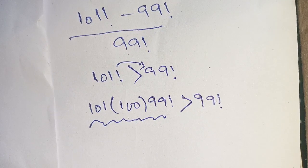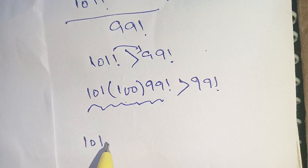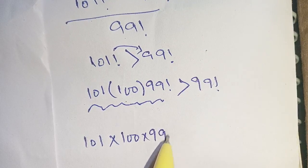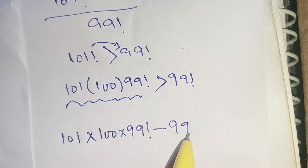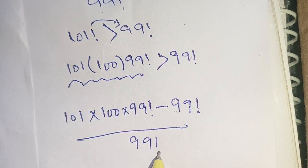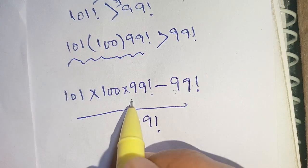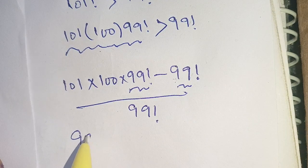Now we have 101 factorial means that 101 times 100 times 99 factorial minus 99 factorial divided by 99 factorial. Now we can take out 99 factorial from this term. We get 99 factorial times here remaining 101 times 100 minus here remaining only 1 divided by 99 factorial.